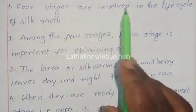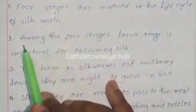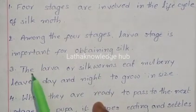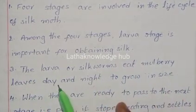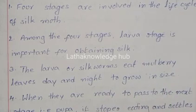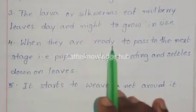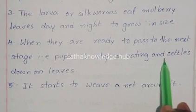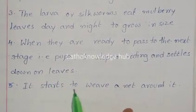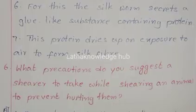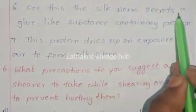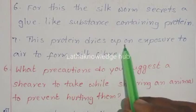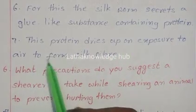Four stages are involved in the life cycle of silk moth. Among the four stages, the larva stage is important for obtaining silk. The larva or silkworms eat mulberry leaves day and night to grow in size. When they are ready to pass to the next stage — pupa — they stop eating and settle down on leaves. The silkworm secretes a glue-like substance containing protein, which dries upon exposure to air to form silk fiber.